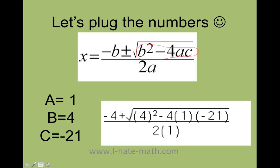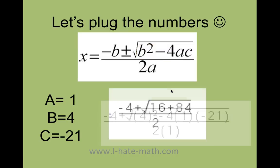But in this case, I just want to go ahead and solve this. So I'm going to do 4 times 4 is 16. Then I'm going to have negative 4 times 1 times negative 21. Remember negative 4 times 1 is negative 4. Negative 4 times negative 21 is positive 84. So now I'm going to have negative 4 plus or minus the square root of 16 plus 84.